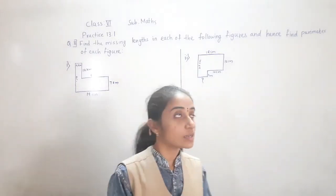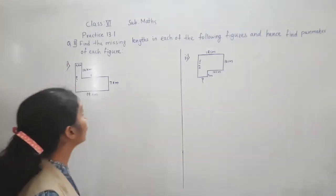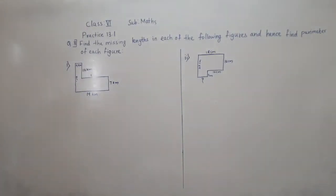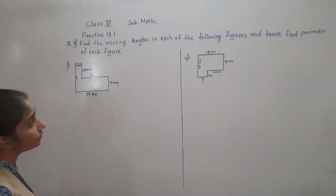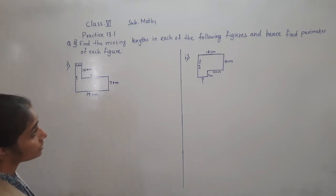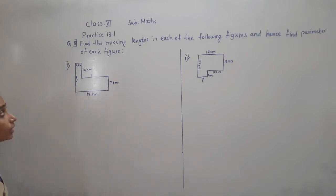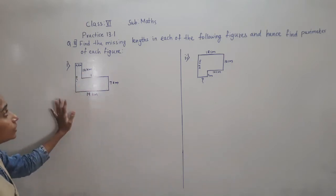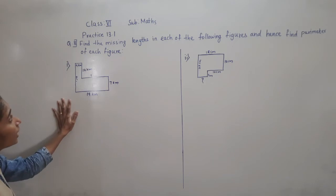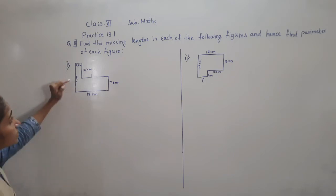Good morning students. Let's solve today Practice 13.1 question number 8: Find the missing lengths in each of the following figures and hence find the perimeter of each figure. Now, see this given figure and we have to find the missing lengths.